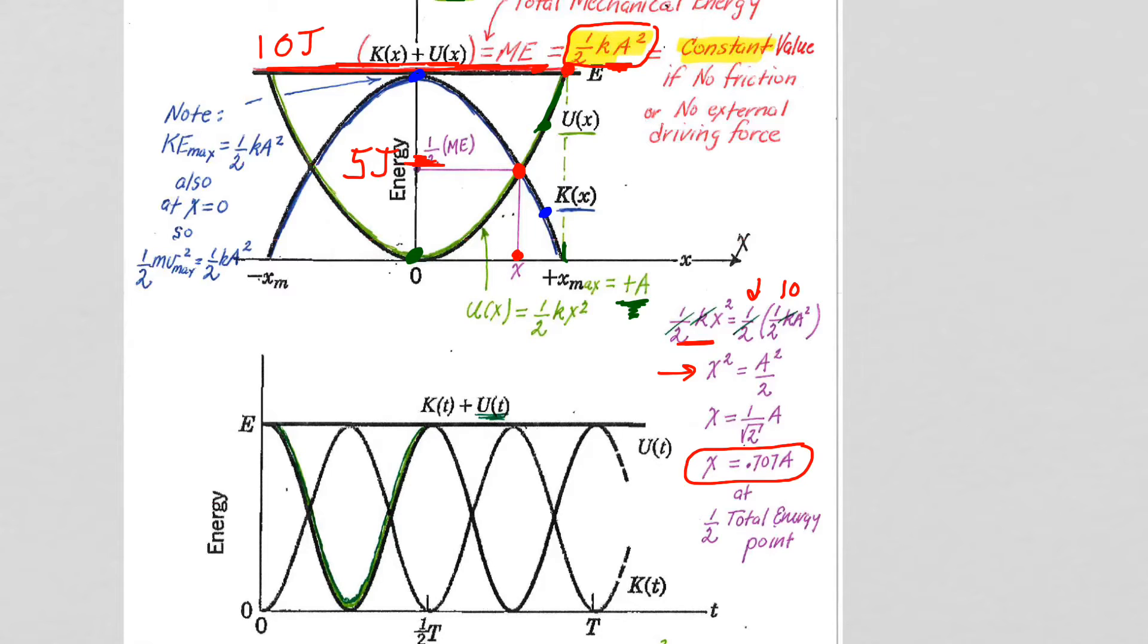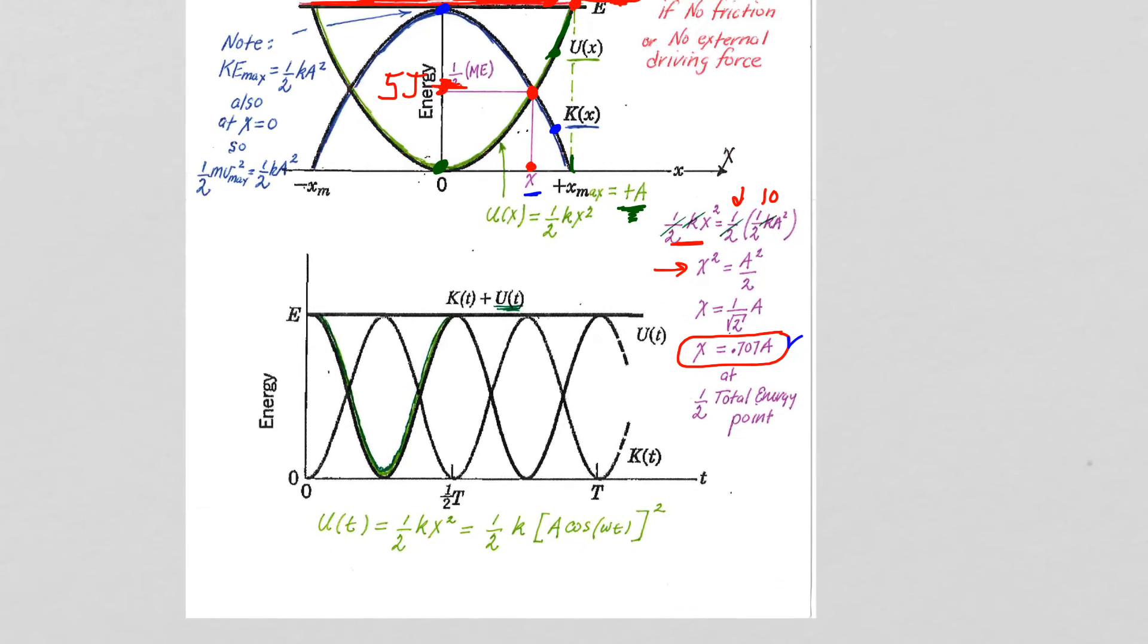So the halfway, the five-joule kinetic energy, five-joule potential energy, is actually at a position, an x position of 0.707, almost 70%, a little over 70% of the amplitude.